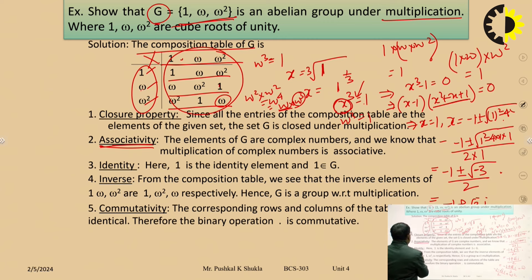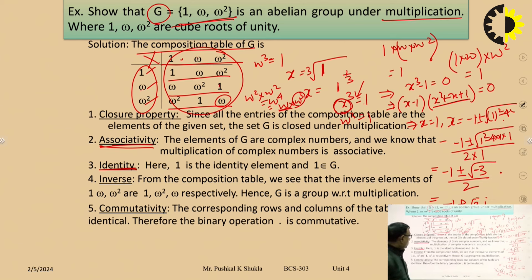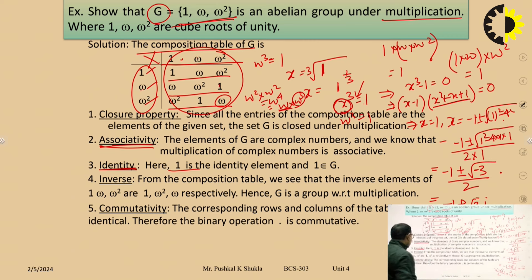Identity: here we see that 1 is the identity element for multiplication. The multiplicative identity is 1 and the additive identity is 0. Since multiplication is the operation here, the multiplicative identity 1 exists and 1 is an element of G. So the identity property also holds.